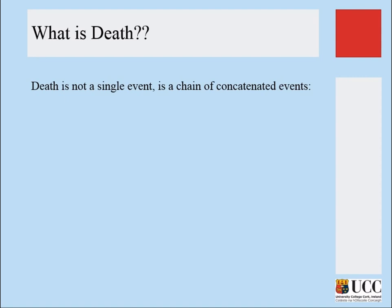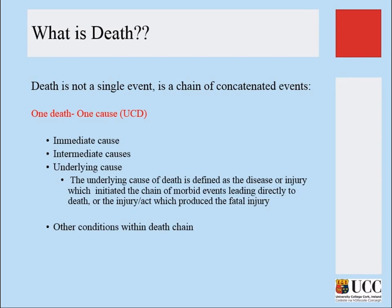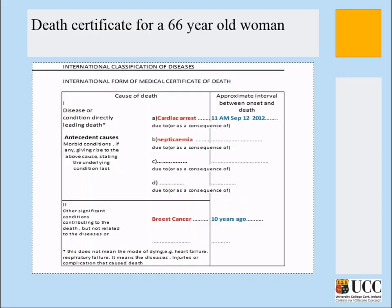Death is not a single event — death is multiple events combined together. It can never be one single cause. There might be one immediate cause, but there are underlying causes working simultaneously. For example, this is the death certificate of a 66-year-old woman. It was written that she died of cardiac arrest at 11 a.m., September 12. But there were secondary consequences — septicemia — and 10 years ago she was diagnosed with breast cancer. She apparently died of cardiac arrest, but multiple causes worked together. This does not mean the mode of dying is heart failure — it means diseases and injuries complicated the situation and caused death together.